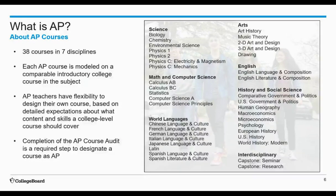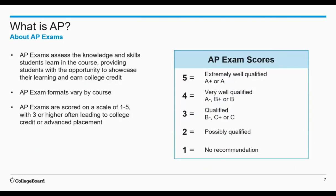To call a course AP — for example, AP Biology — there is something called the AP course audit that has to be completed, and we will talk about that more in our third section tonight. For each AP course, students have the opportunity to showcase their learning and earn college credit through AP exams. Most AP exams are offered the first two full weeks of May, but exam formats vary by course — most have an end-of-course exam with multiple choice and free response sections, while some courses are fully portfolio-based or have a portfolio component.